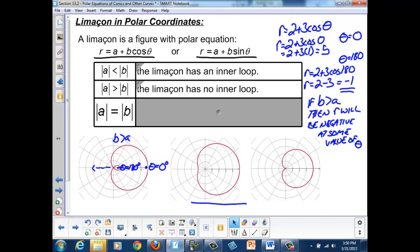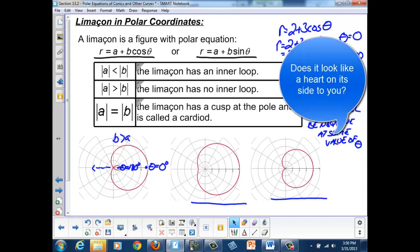And finally, if they're exactly equal to each other, there will be some value of theta, which creates an r value of 0. So, our graph will touch the origin, but not create a loop. We say it has a cusp, and we call it a cardioid.